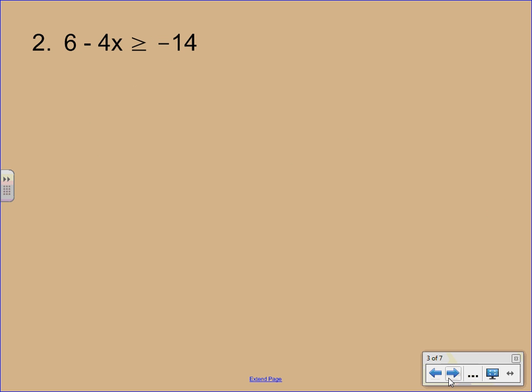Next example. Be careful with this one. A lot of times students will see the negative sign there and assume that they want to add to cancel. But if you look at the 6, this is a positive 6. So we actually have to start by subtracting 6 from both sides.